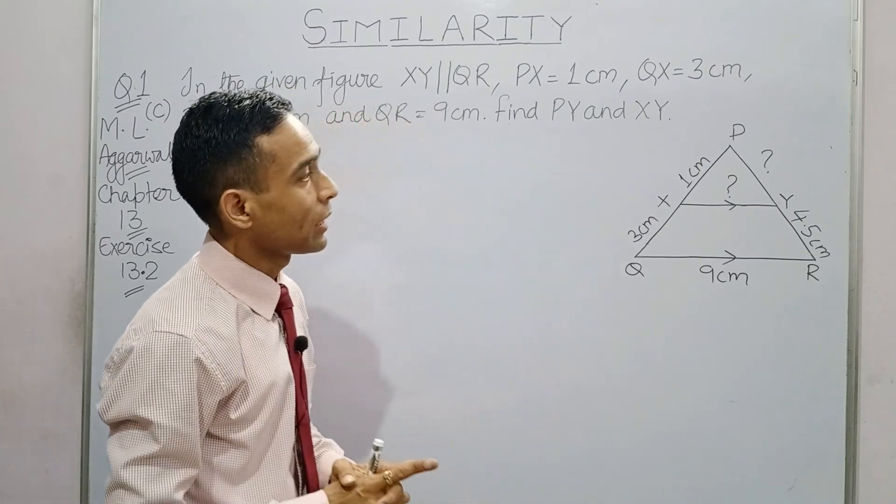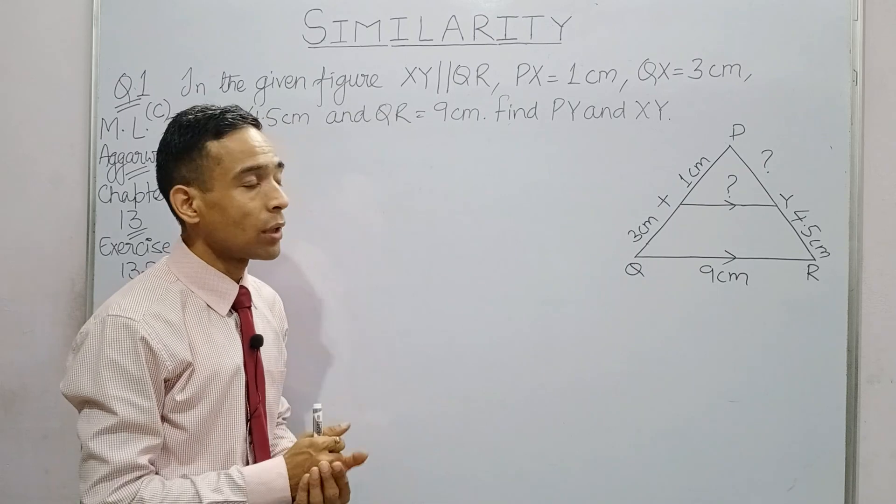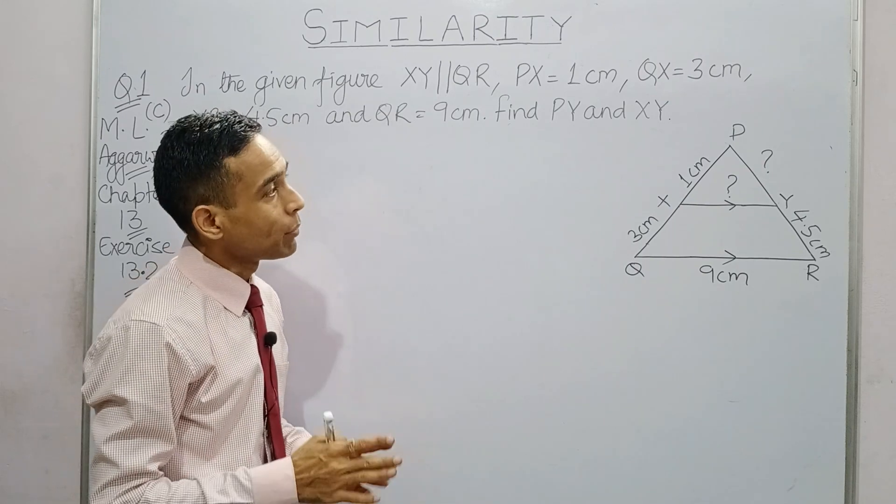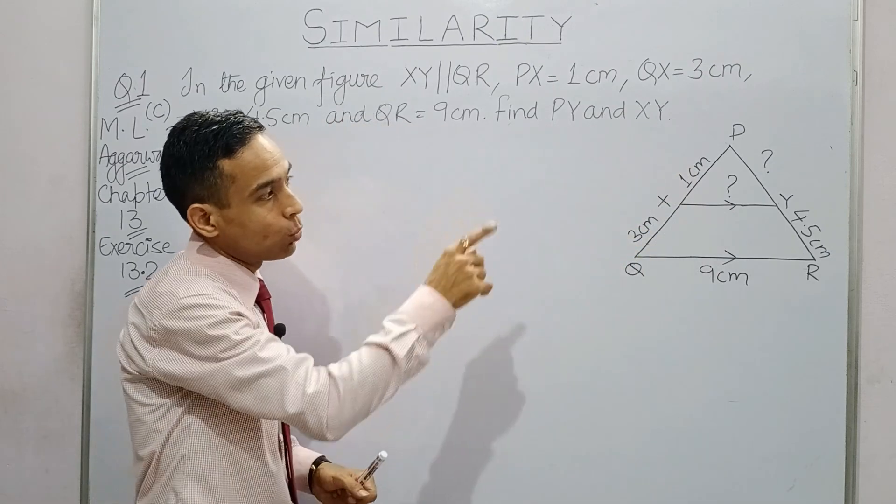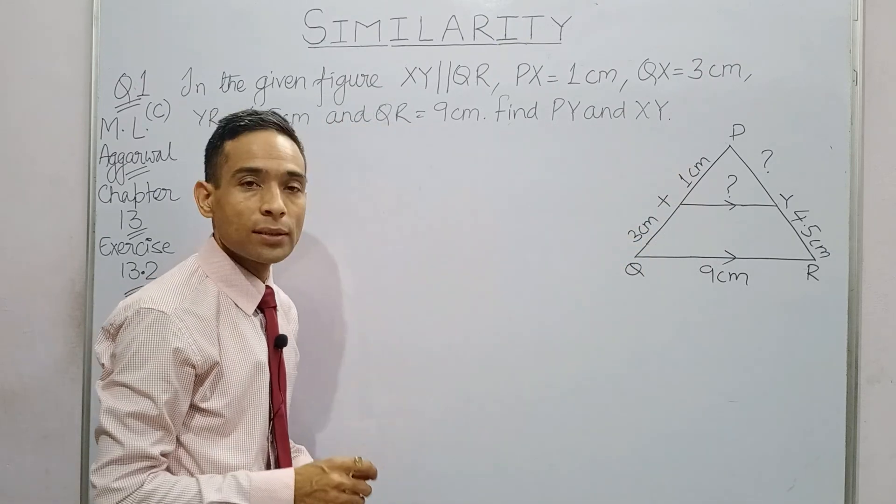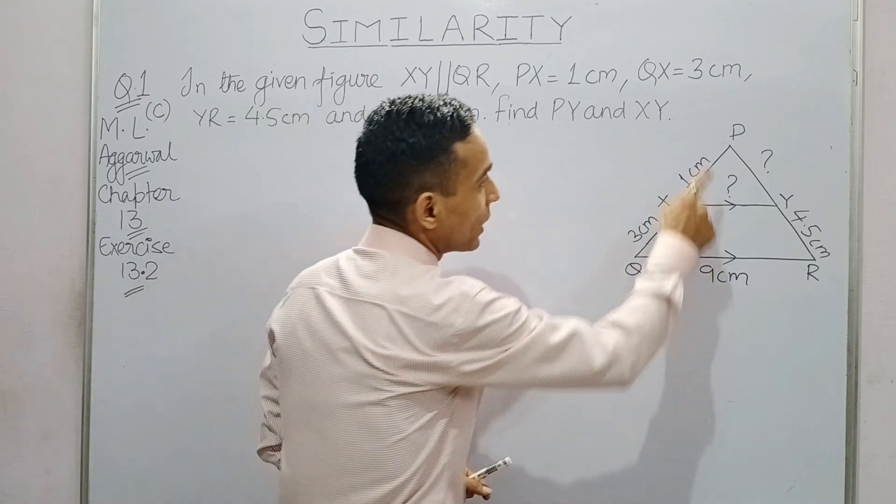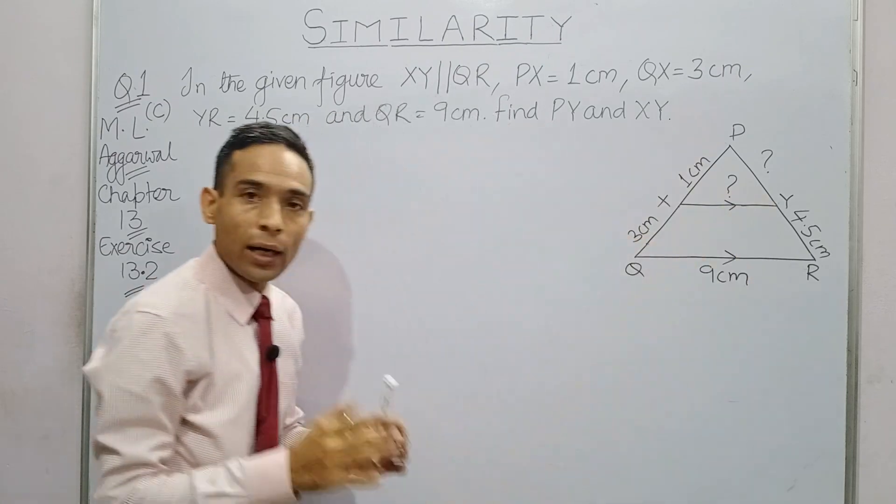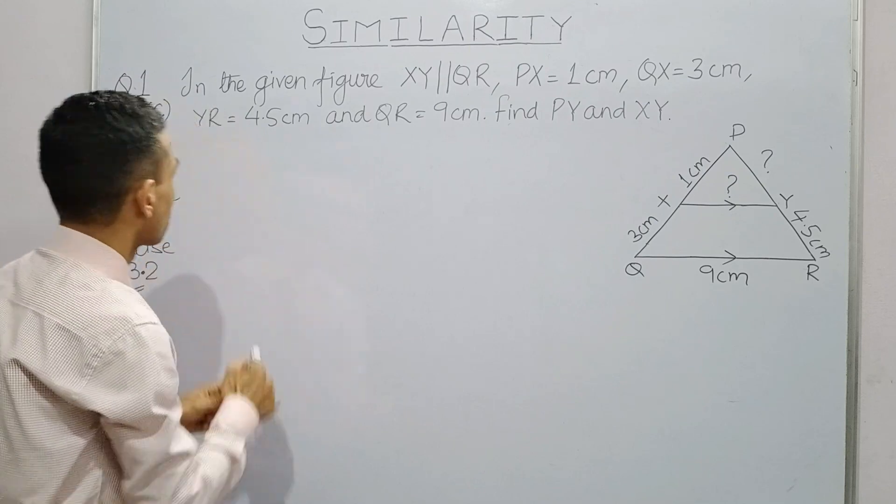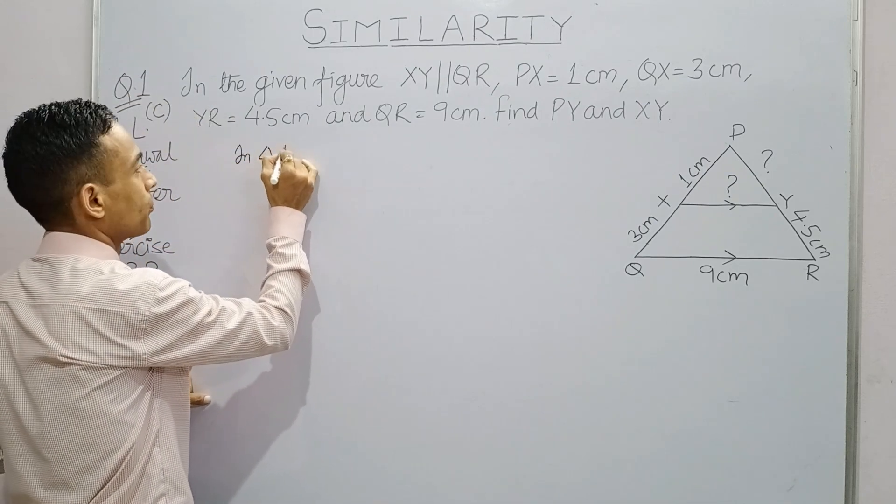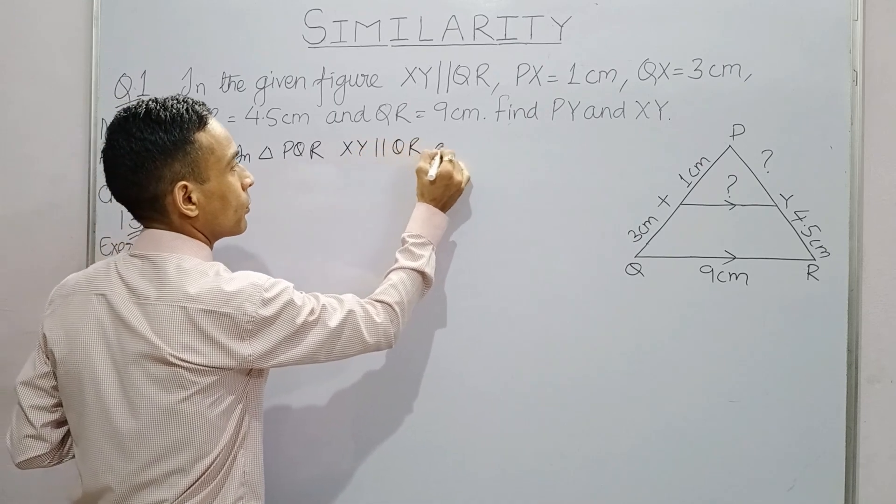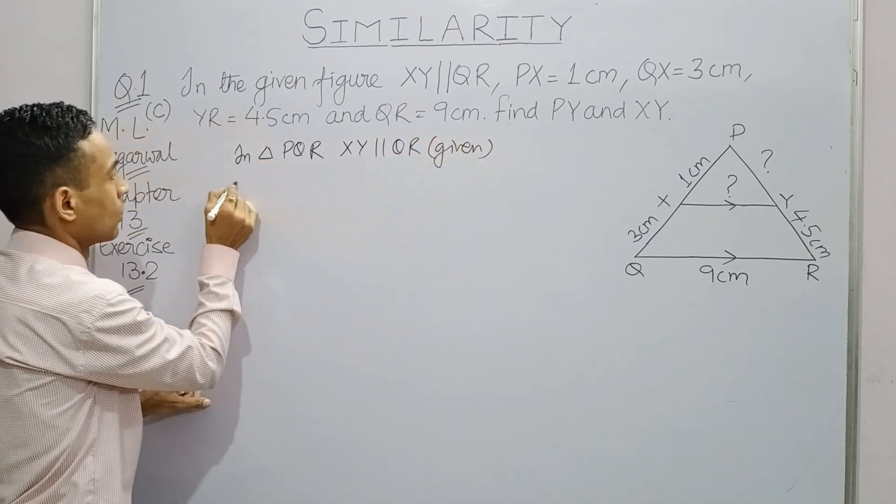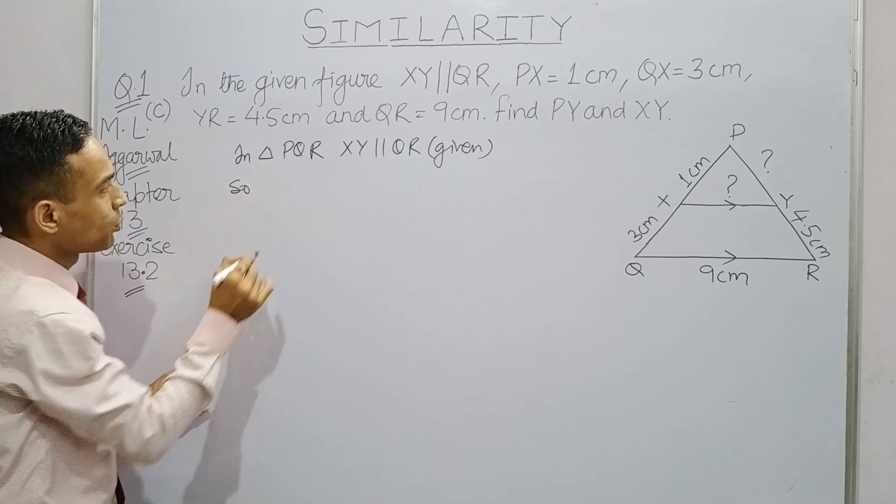Next, we have a triangle PQR where XY is parallel to QR. We are given PX is 1 cm, QX is 3 cm, YR is 4.5 cm, and QR is 9 cm. We need to find out PY and XY. Using Basic Proportionality Theorem...